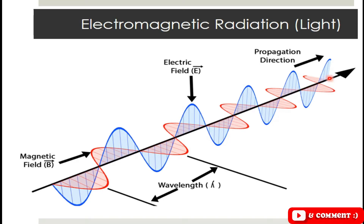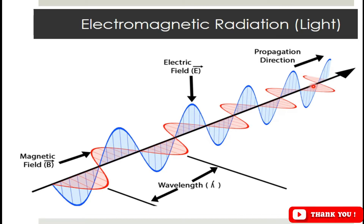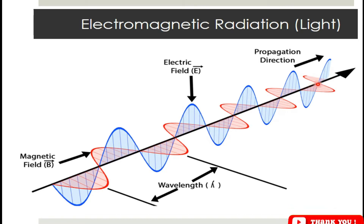They are not only perpendicular to each other, but they are also perpendicular to the direction of propagation — by direction of propagation I mean the direction in which light travels. Electromagnetic radiation have different properties.